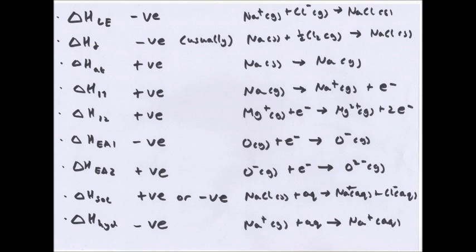Lattice Enthalpy is the enthalpy change that accompanies the formation of one mole of ionic compounds from its gaseous ions under standard conditions. Enthalpy change of formation is the enthalpy change that takes place when one mole of a compound is formed from its constituent elements.